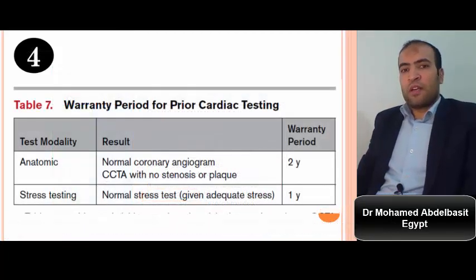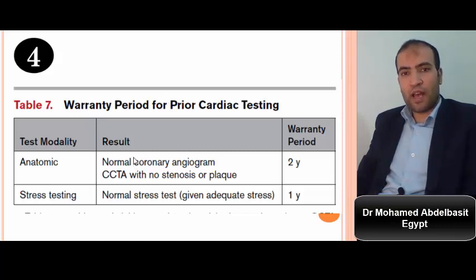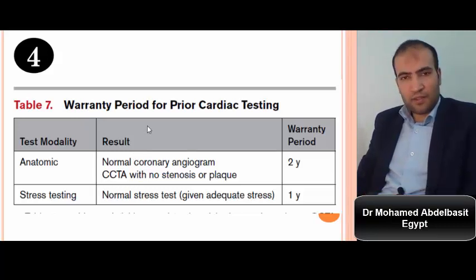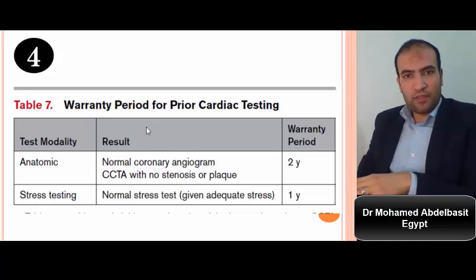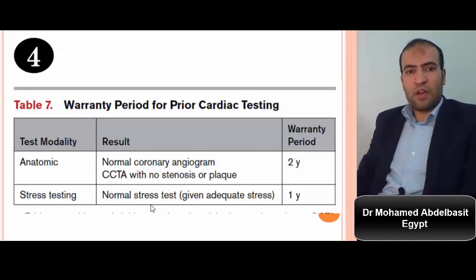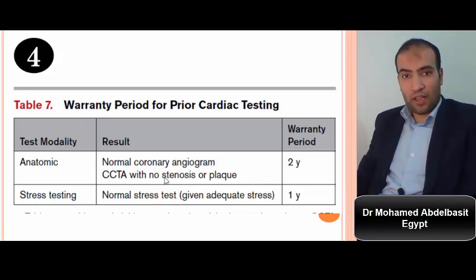Number four: respect the previous investigations of the patient. If the patient had an appropriate CT coronary angiogram which was normal, this investigation is valid for two years. If the patient presents to you within two years of that normal investigation, the patient is unlikely to have ischemic heart disease. Also, if the patient has an adequate and normal stress test, it is valid for one year, and the patient is unlikely to have ischemic heart disease.